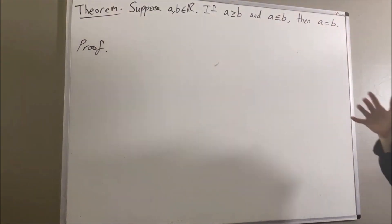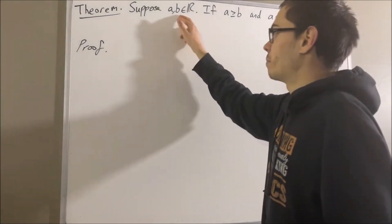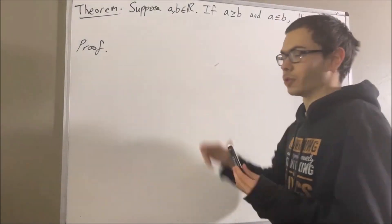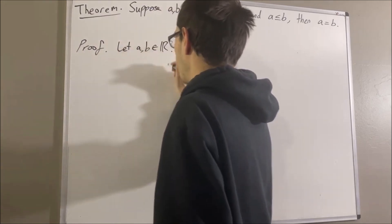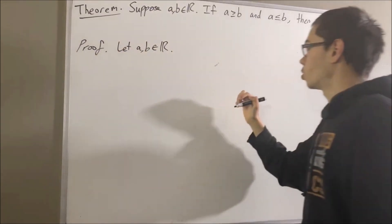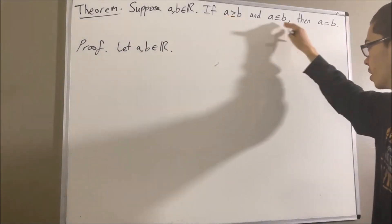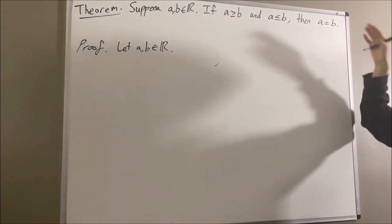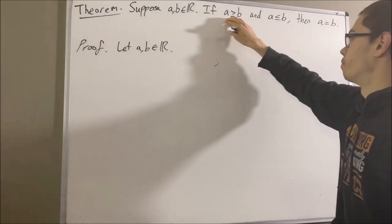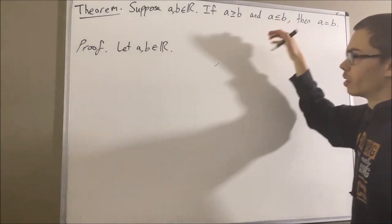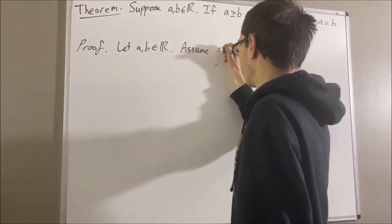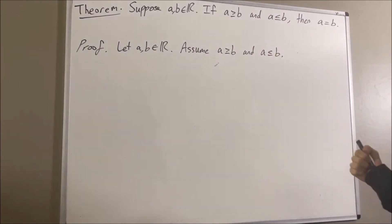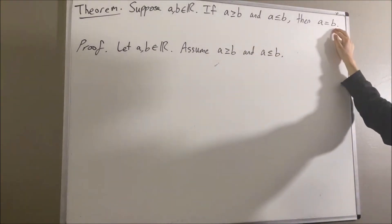Let's start off this proof by letting A and B be two arbitrary real numbers. From here, our goal is to prove if the hypothesis is true, then the conclusion is true. So let's assume the hypothesis is true. Our goal from here is to deduce that A is equal to B.